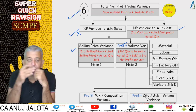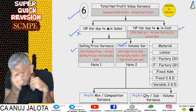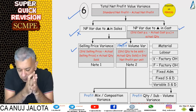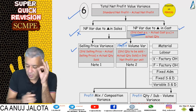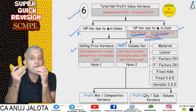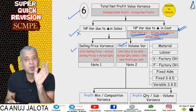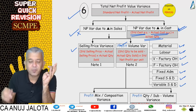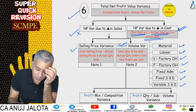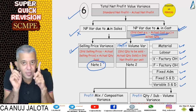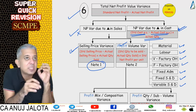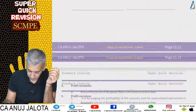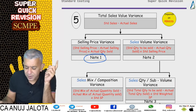The net profit variance due to change in cost is: what should have been the cost minus what was the actual cost, multiplied by actual quantity — that is, how much per unit you should have incurred versus how much you actually incurred, multiplied by actual quantity. This variance further gets divided into material, labor, variable factory overheads, fixed factory overheads, fixed admin, fixed SND, and variable SND. The selling price variance is the only variance that appears the same way under both sales variances and profit variances — that's why I've written Note 1.